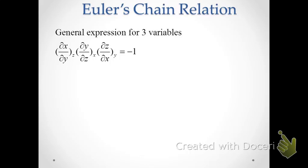Another very important property of partial derivatives involves a system of three variables x, y, and z. There is a cyclic product rule: (dx/dy) at constant z, times (dy/dz) at constant x, times (dz/dx) at constant y — that product of three partial derivatives is equal to negative one. There's a pattern here: the numerator of each derivative becomes the constant of the next, cycling through x, y, z.